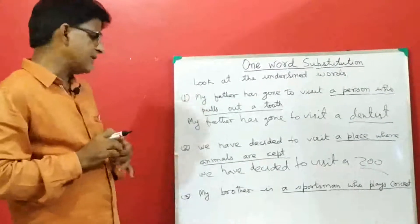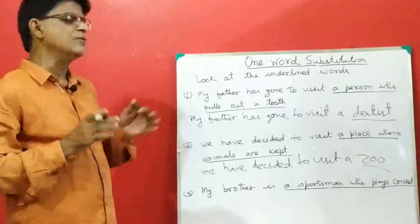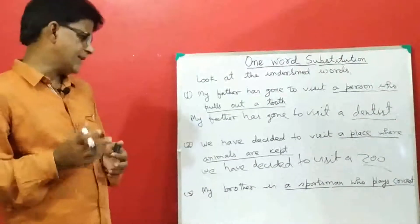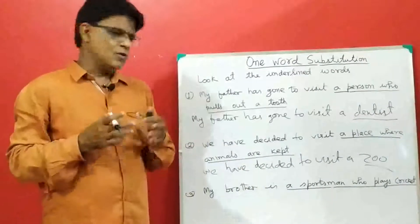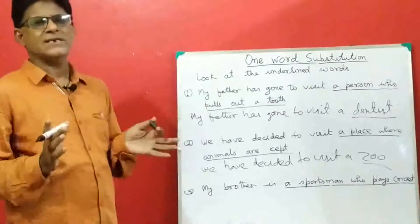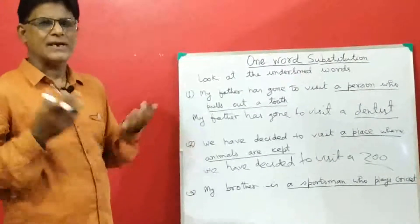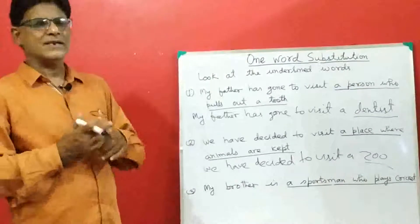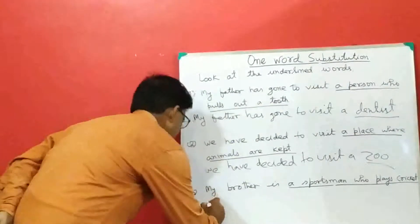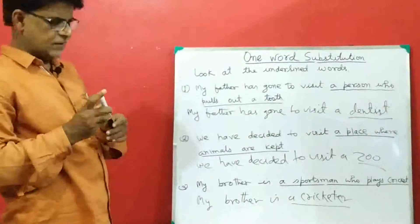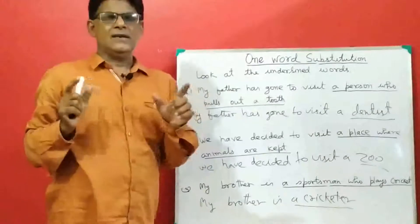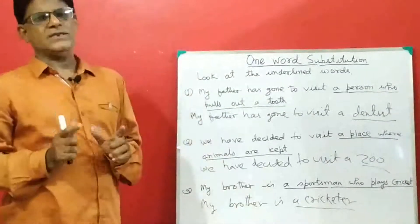And in the last sentence, 'my brother is a sportsman who plays cricket' — it can be replaced. So who is he called? A sportsman who plays cricket — naturally, a cricketer. A cricketer plays cricket. So we can rewrite the sentence. In this example also, we have seen that a certain group of words can be replaced by a single word.